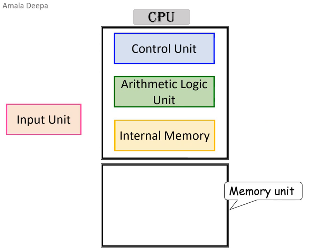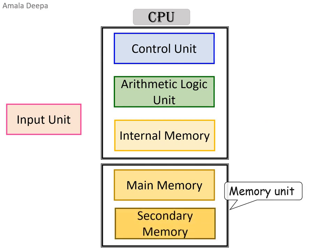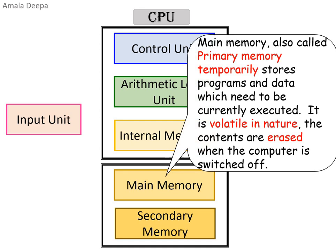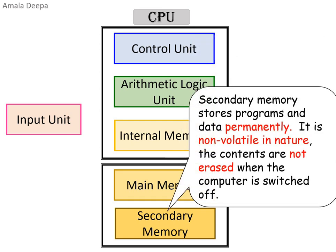The memory unit is of two types: main memory and secondary memory. Main memory, also called primary memory, temporarily stores programs and data which need to be currently executed. It is volatile in nature — the contents are erased when the computer is switched off. Secondary memory stores programs and data permanently. It is non-volatile in nature — the contents are not erased when the computer is switched off.